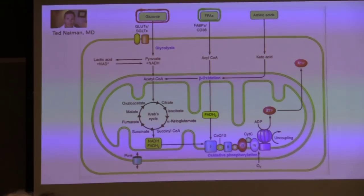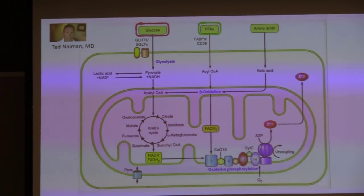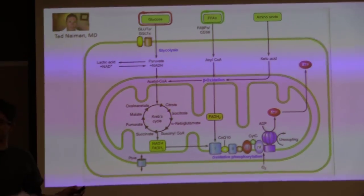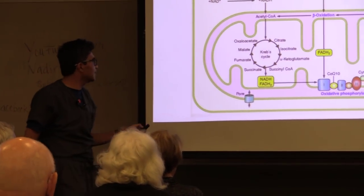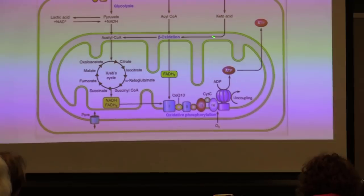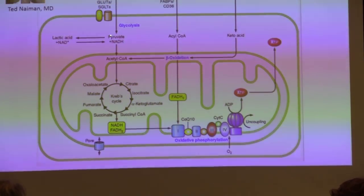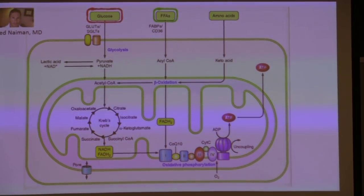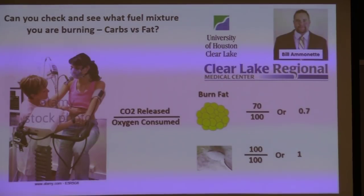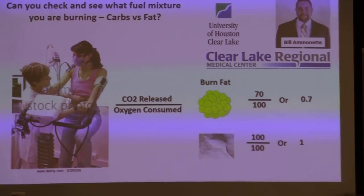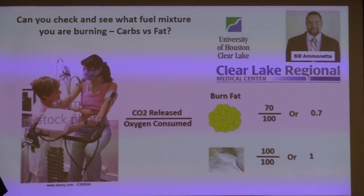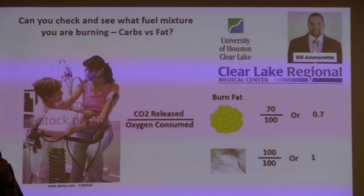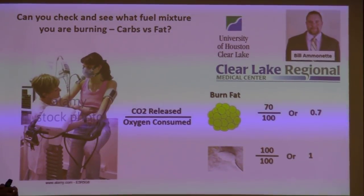This is the engine of the cell — the mitochondria — and it can either burn sugar or fat. Amino acids from protein are a very minor player. When we exercise or go about daily living, we take in oxygen to burn fuel and put out carbon dioxide.